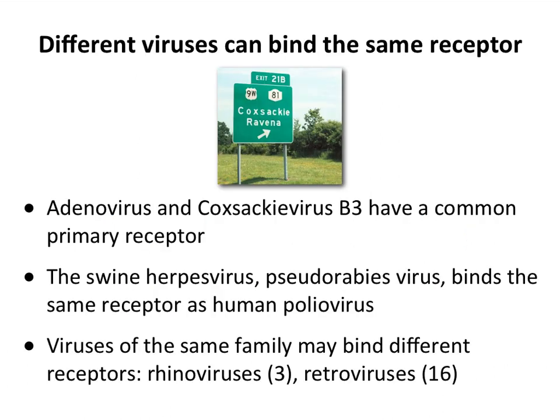Some viruses bind more than one receptor, and sometimes one receptor binds more than one virus. For example, there is a receptor called CAR — Coxsackie and Adenovirus Receptor — because it binds either of those two very different viruses. Adenovirus is the icosahedral virus with fibers coming out, and those fibers bind the receptor. Coxsackie is also icosahedral but has no fibers, yet they both bind CAR. Coxsackie virus, by the way, is named after Coxsackie, New York — exit 21B on the New York State Thruway — because of an outbreak in the 1940s initially thought to be polio.